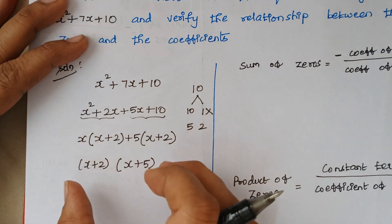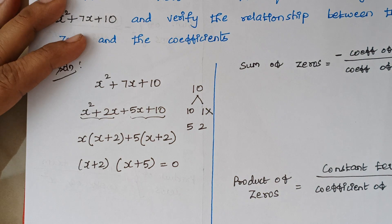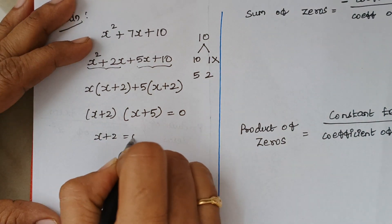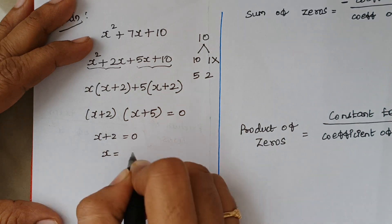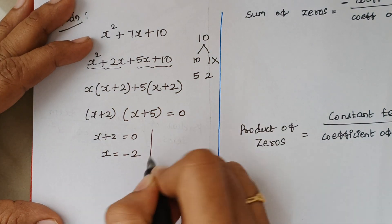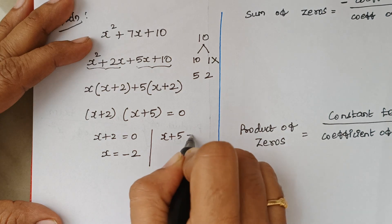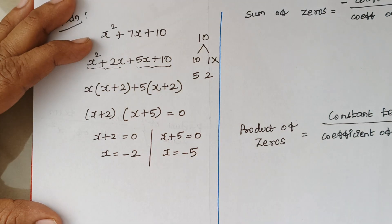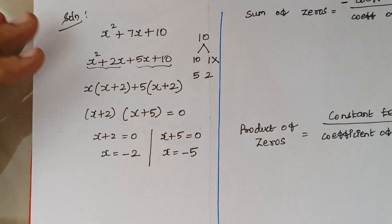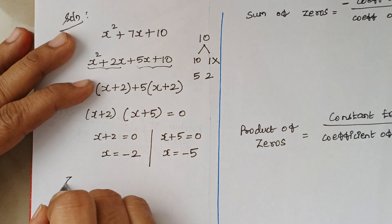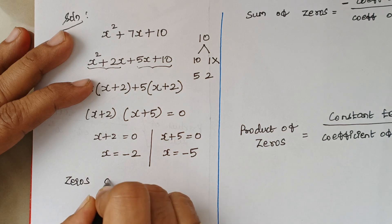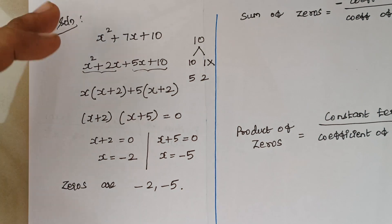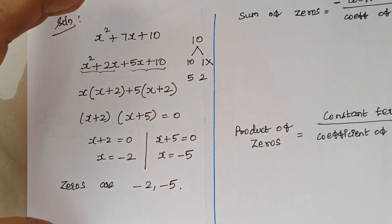When you equate these terms to 0, we can find the value of zeros. So, x + 2 = 0 implies x = −2, and x + 5 = 0 implies x = −5. So the zeros of this quadratic polynomial are −2 and −5. The first part of the problem is done.